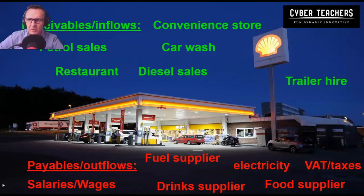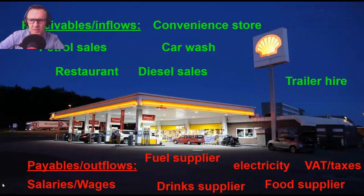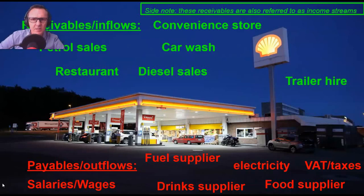Let's look at this example. At the top we've got receivables or inflows. For a convenience store, I've got a list: income, petrol sales, you might sell diesel, you might have a restaurant or takeaway restaurant, you might have a car wash, you might have a trailer hire. Just a little side note — these receivables are also referred to as income streams. Basically, the more income streams you can generate for your business, the better. Can you think of any other inflows or receivables? Think about that for a second or two.